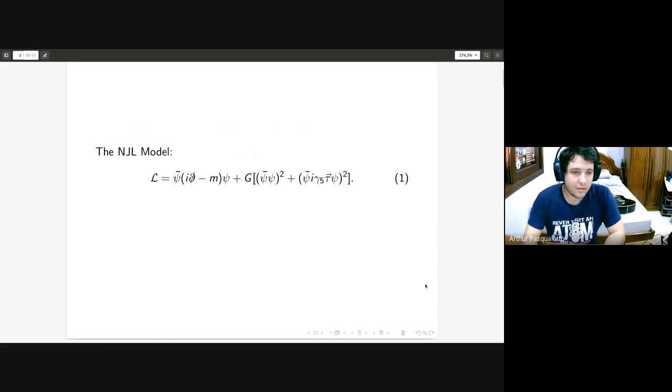Let's begin to talk about the NJL model, which is an effective model for description of quarks. We work with this model in the mean field approximation, and the equations that arise from this Lagrangian density are used to describe the system of a gas of quarks that are strongly interacting.